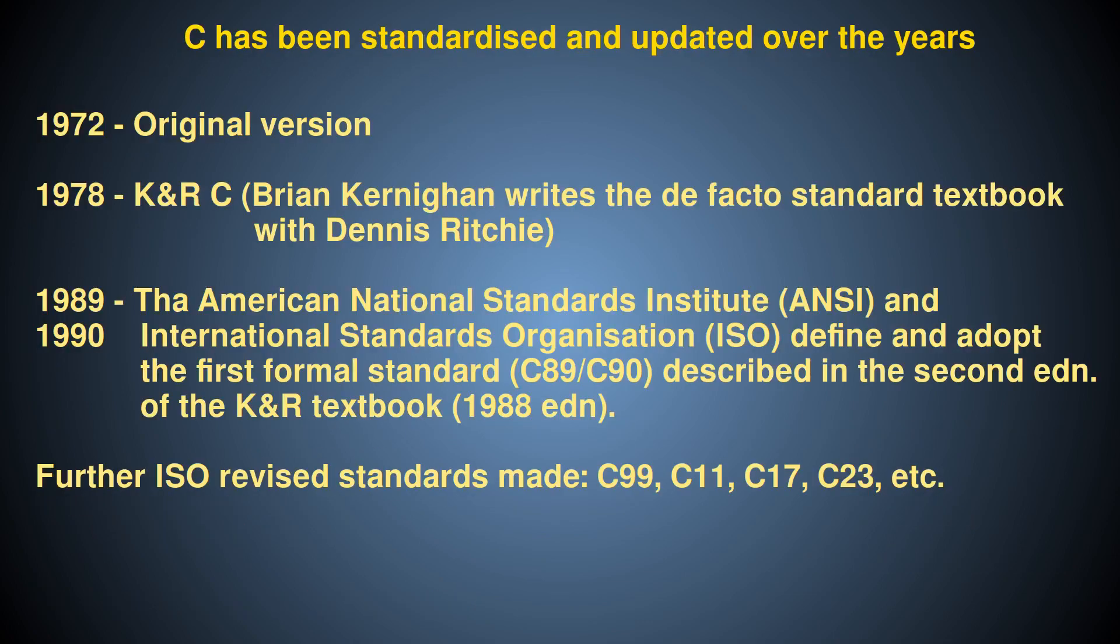The C programming language has undergone several updates and standardizations since its creation, and remains a popular and influential language to this day, over 50 years since it was first created. Its ability to give relatively low-level access to the computer hardware while still being a high-level language means it is particularly popular for writing compilers and software on embedded computer systems, which lack the large computing overhead resources that are needed to implement other high-level languages.